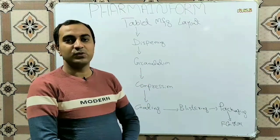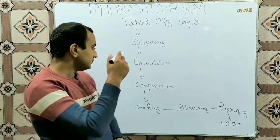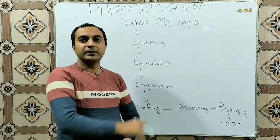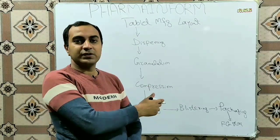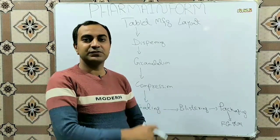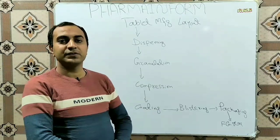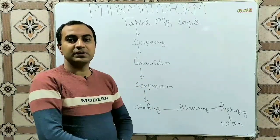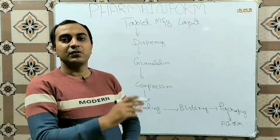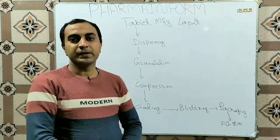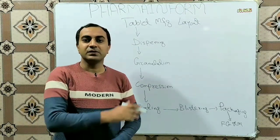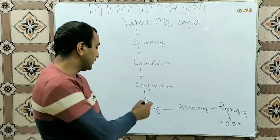When our product is granulated, the granules are ready for compression. After blend preparation, the blend sample is sent to the quality control department for analysis. When the blend is approved and its assay is okay, it is ready for compression. At the compression stage, we convert granules into tablets. When all the powder and granules are compressed, the product is ready for the coating stage.